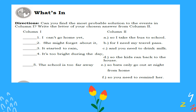Was it easy for you? Let's try the activities that we can find in your module. For 'What's In,' can you find the most probable solution to the events in column one? You're going to write the letter of your chosen answer from column two.